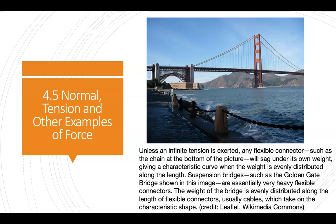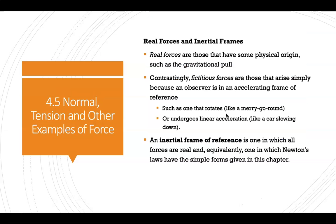Some different examples of tension: one really common one is a bridge. This is the Golden Gate Bridge, referred to as a suspension bridge, because it uses the idea that we can create tension to help distribute the weight on a bridge evenly. That's really important if we don't want the thing to actually collapse.